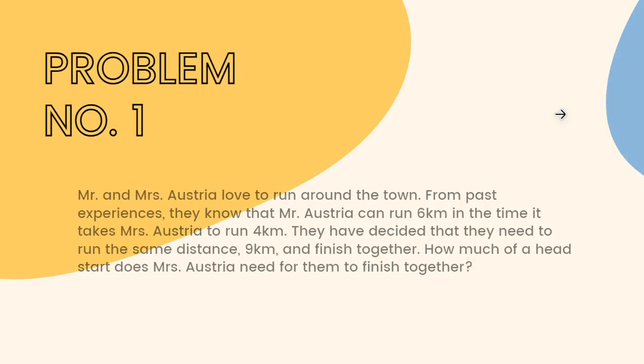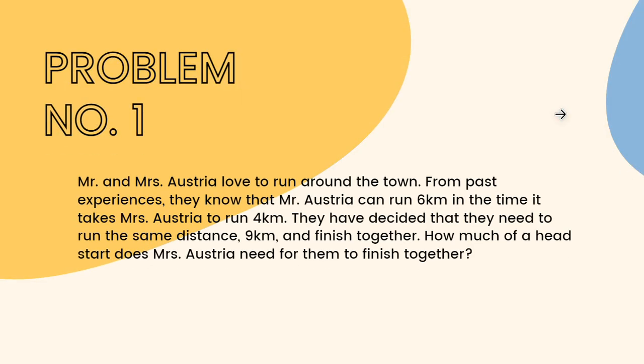To start, the first problem states that Mr. and Mrs. Austria love running around town. From past experiences, they know that Mr. Austria can run six kilometers in the same time it takes Mrs. Austria to run four kilometers.